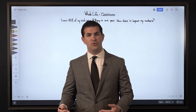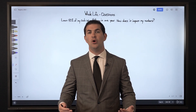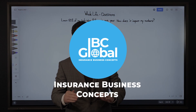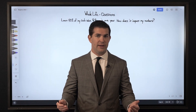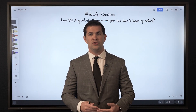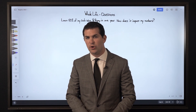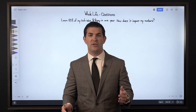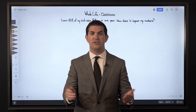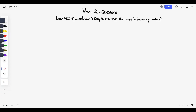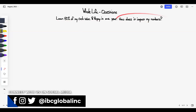We recently received some questions from an existing client about taking loans from his life insurance policies. The questions he had were excellent because they're commonly asked by individuals about their whole life insurance policies with respect to loans: how much can I borrow, how does the loan interest work? His first question was: if I loan 80% of my cash value and repay it in one year, how does that impact my numbers in my life insurance policy?